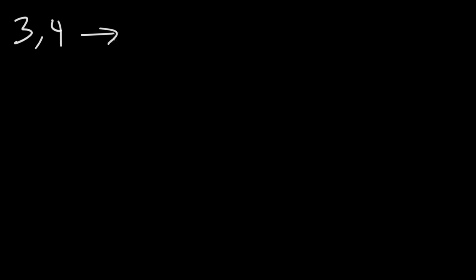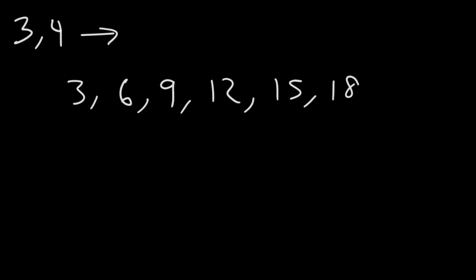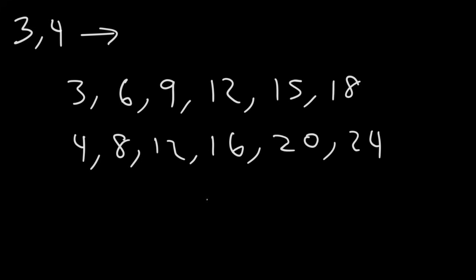Now let's try another example. How can we find the LCM of three and four? Feel free to pause the video and see if you can get the answer. Now let's write out the multiples of three: three, six, nine, twelve, fifteen, eighteen. Multiples of four: four, eight, twelve, sixteen, and so on. So we can see that twelve is the least common multiple of three and four.